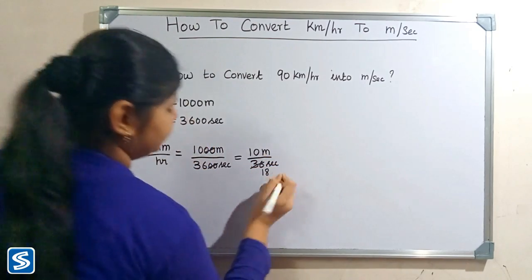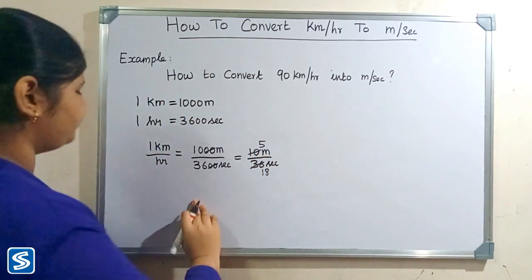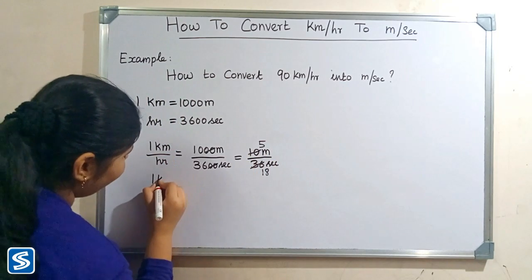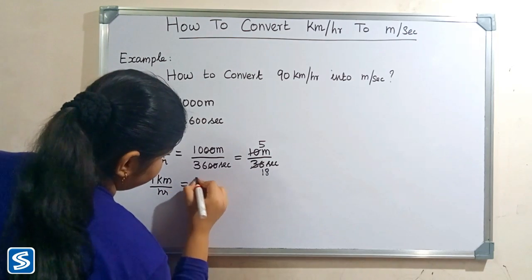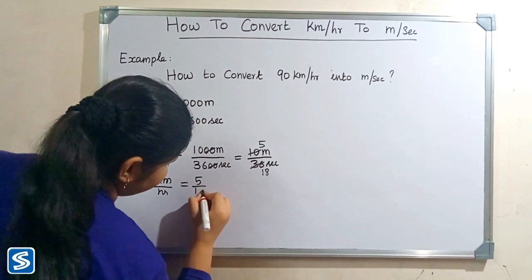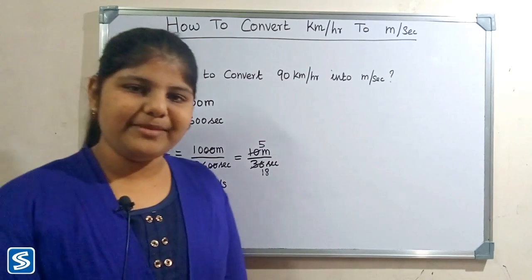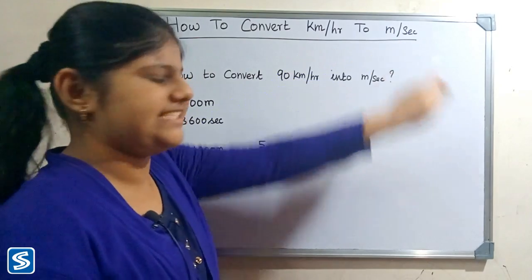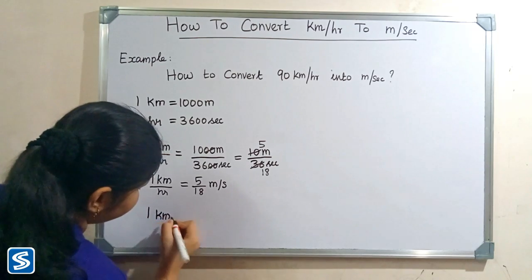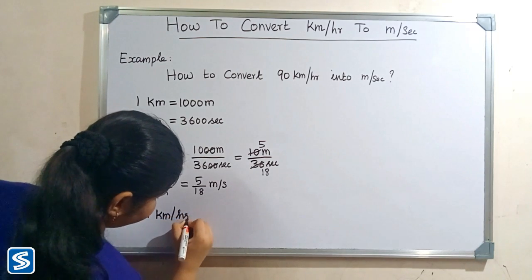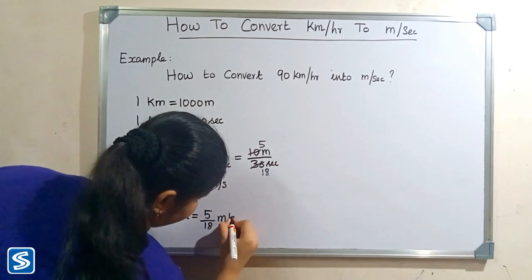Two 18s are 36 and two 5s are 10, so one kilometer per hour is equal to 5 by 18 meter per second. So the formula for converting kilometer per hour into meter per second is: 1 kilometer per hour equals 5 by 18 meter per second.